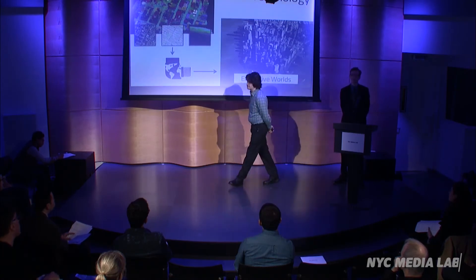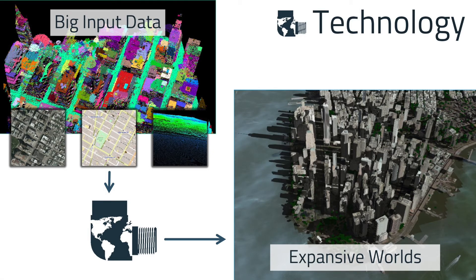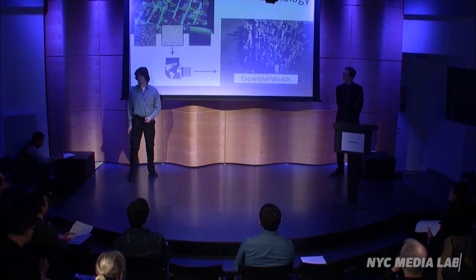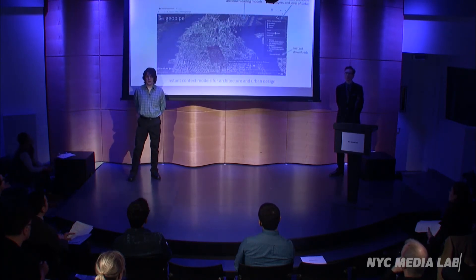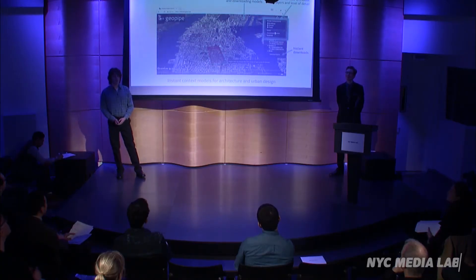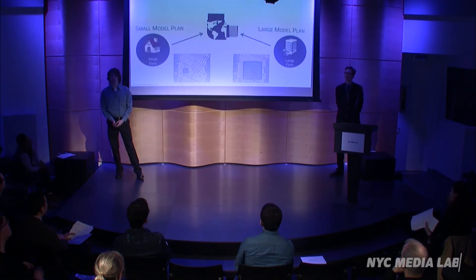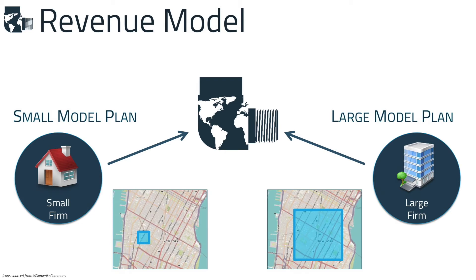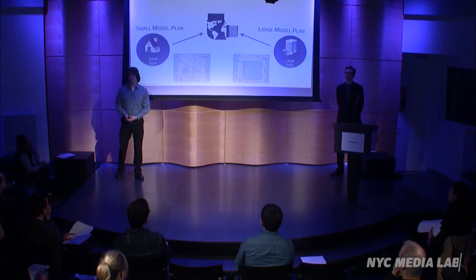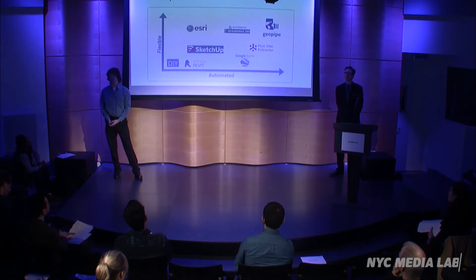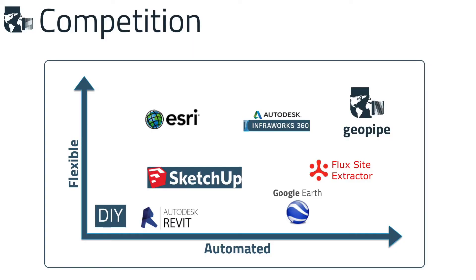GeoPipe's technology works by taking a vast array of different input sources on a large scale and feeding it through an algorithmic pipeline that utilizes machine learning techniques in a distributed system setting. Out the other end, we produce high-quality expansive worlds. Our first product allows clients to browse a 3D map in their web browser, select an area of the world they're interested in, choose the level of detail and layers they want, and download the model to their own computer. Our revenue model scales to meet the needs of both small firms working across a diverse area and large firms working on concentrated projects on a subscription basis. GeoPipe is well poised to offer superior automation and flexibility compared to tools that architects and others are already using to model the real world.